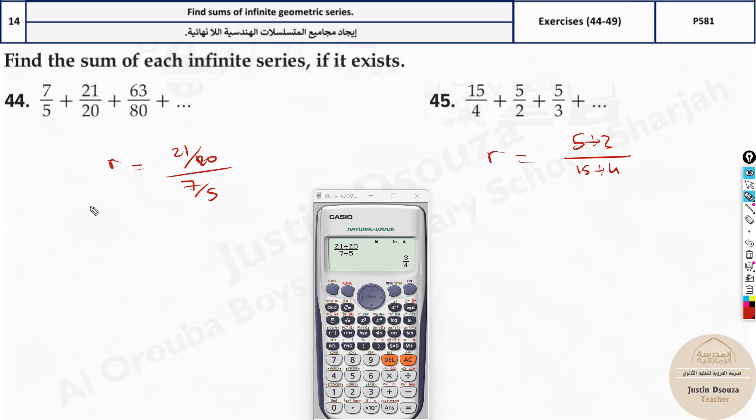Now the answer over here is 3 fourth. So what do you do now? Write the sum formula. A1 by 1 minus r. A1 is 7 divided by 5, 1 minus 3 fourth, that is 1 fourth. You can put that entirely in the calculator. It is 7 divided by 5, over here it's 1 minus 3 fourth, 0.75, or you can write 3 fourth. So the answer is 28 by 5. You can see that's the answer.